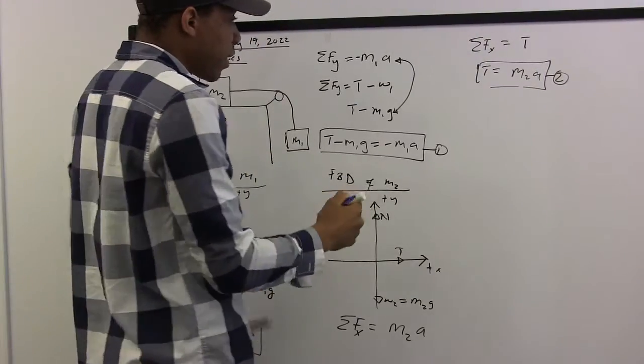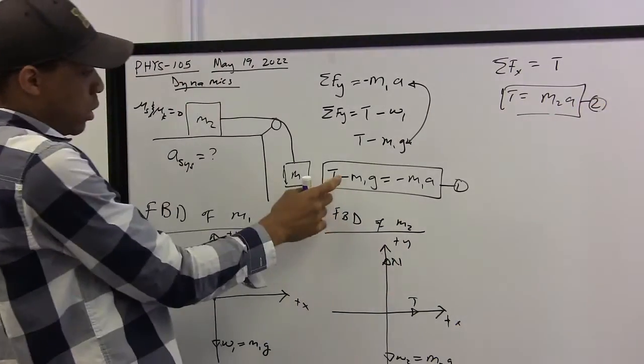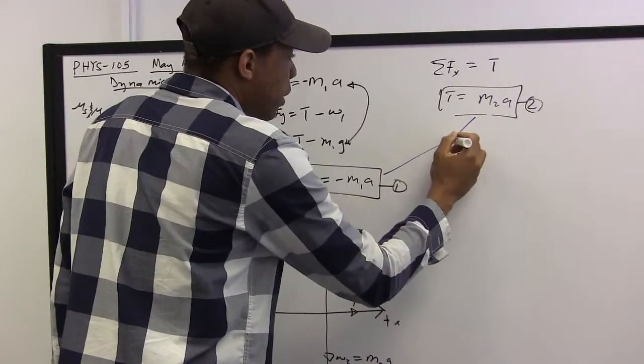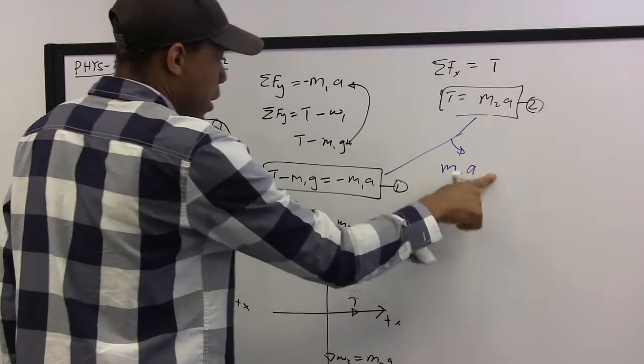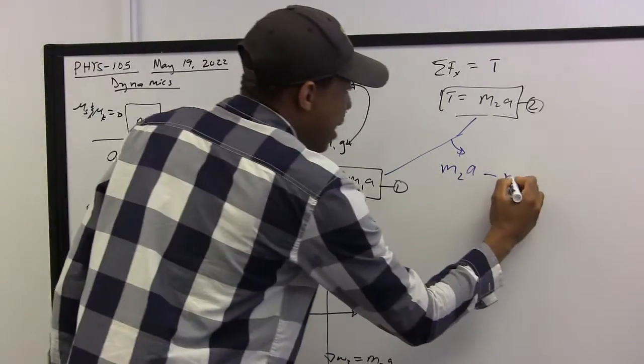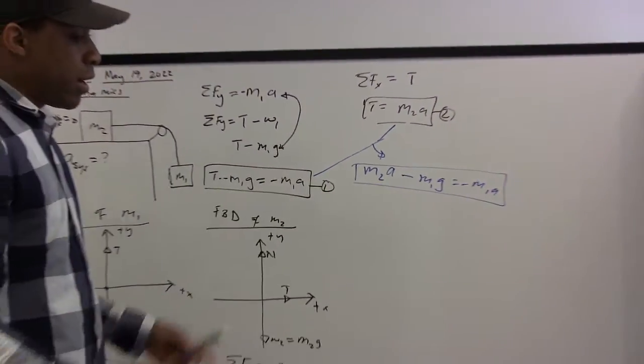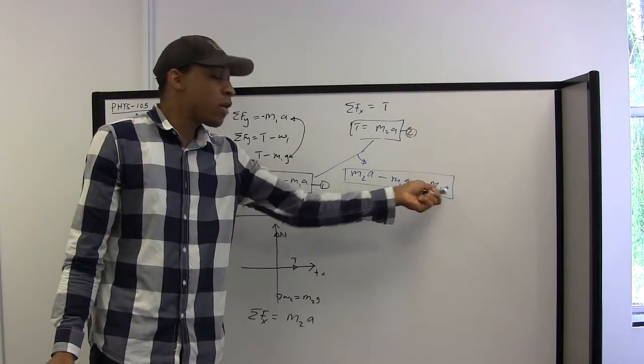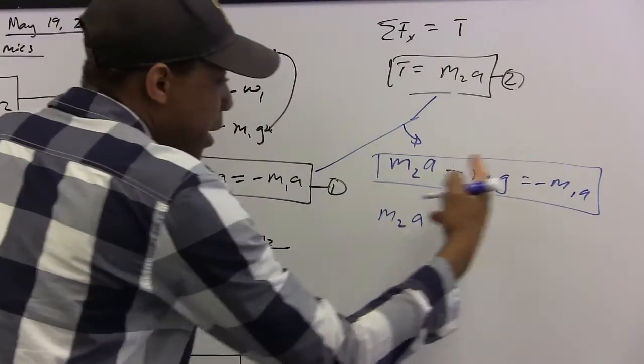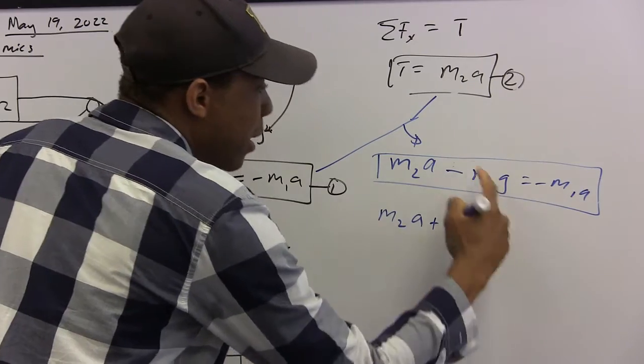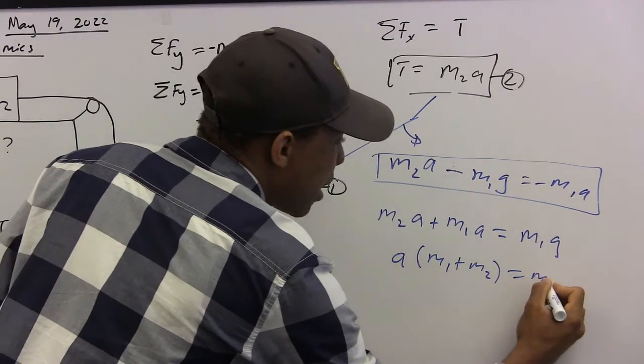We can now replace the expression for the tension as given by equation two in equation one. So if we connect these two, tension equals m2a, this is equal to the minus sum here, so we have m2a plus m1a equals m1g. This is the equation of motion of the system. The final task remaining is to solve for the acceleration of the system. And this is just algebra. m2a comes across the equation and becomes plus m1a. This goes across the equation and is plus m1g. Factor out a, we get (m1 + m2)a equals m1g. We divide both sides by the sum of the masses.